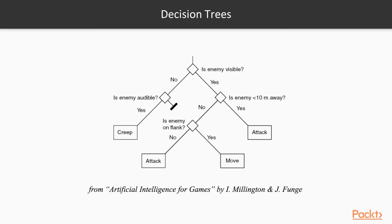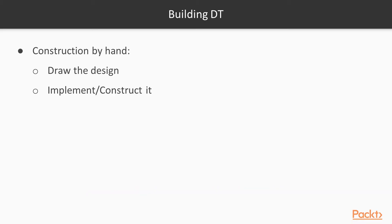If we consider this decision tree as an example, we start from the root and check whether the enemy is visible or not. If the answer is yes, we check whether the enemy is closer than 10. If the answer is no, we make the final test and check whether the enemy is on flank or not. If the answer is yes, we take the move action.